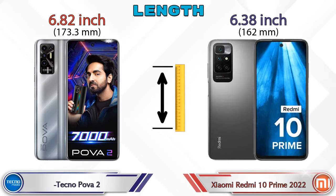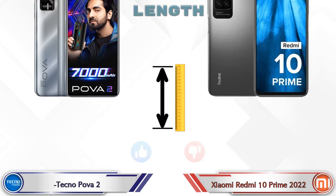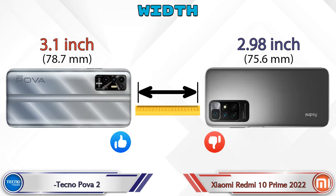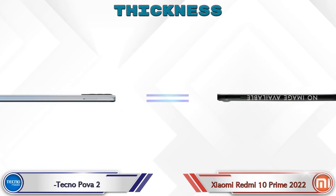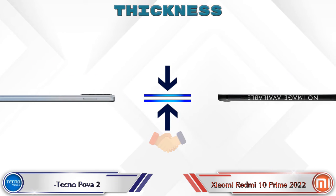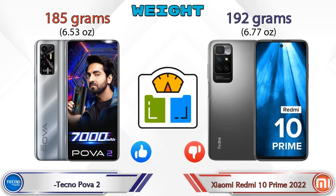Now let's check the dimensions. The length of the Tecno Pova 2 is 6.82 inches and the Redmi 10 Prime 2022 is 6.38 inches, which is less. Width: Tecno Pova 2 is 3.1 inches and Redmi 10 Prime 2022 is 2.98 inches. Both phones share the same thickness of 0.38 inches. For weight, Tecno Pova 2 is 185 grams and Redmi 10 Prime 2022 is 192 grams, which is heavier.